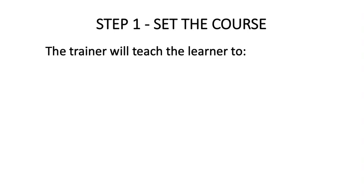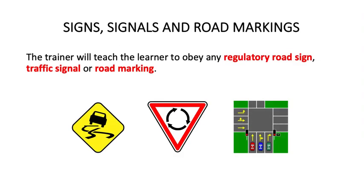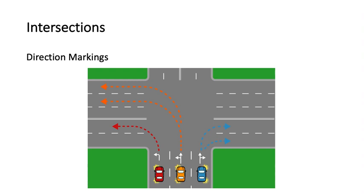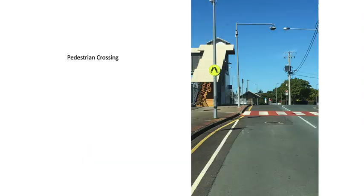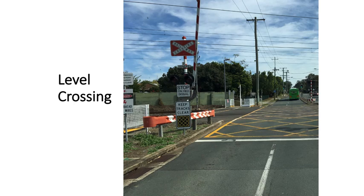Step one: set the course. The trainer will teach the learner to scan ahead, identify hazards, make a plan, and prepare to respond. This includes identifying signs, signals and road markings, as well as directional markings such as those seen at intersections, identifying pedestrian crossings ahead, children's crossings, and level crossings.